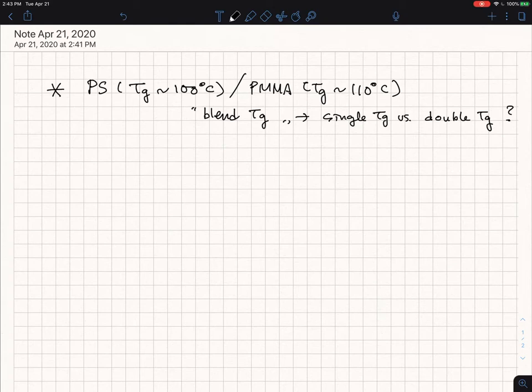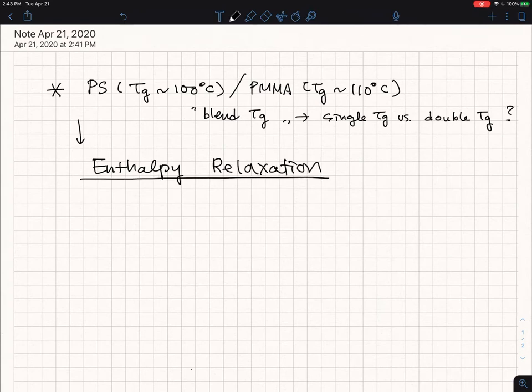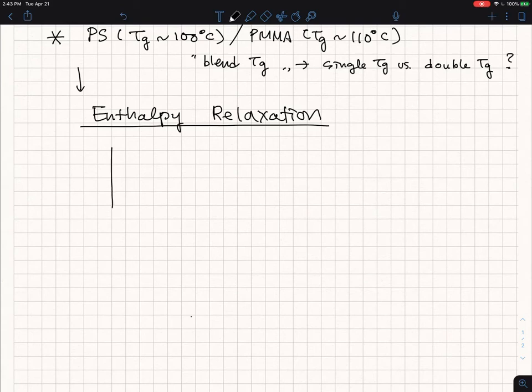And this whole technique is what I'm calling enthalpy relaxation. So what I'm trying to say is the following. I give you the idea about this is your TG, so you're looking at heat capacity, heat flow, and this is the temperature. This is your TG.